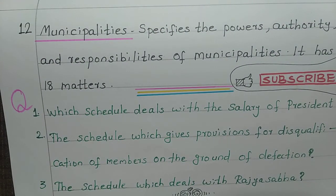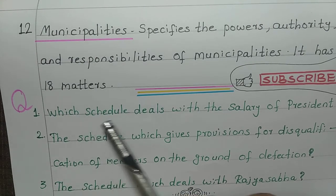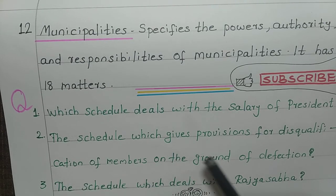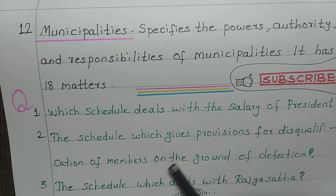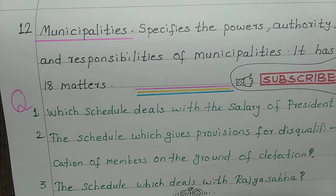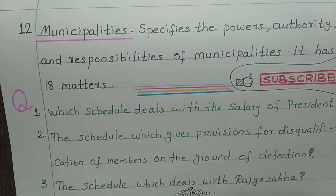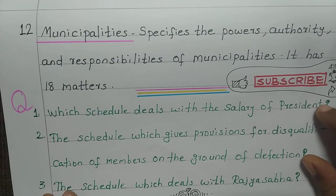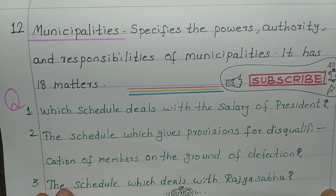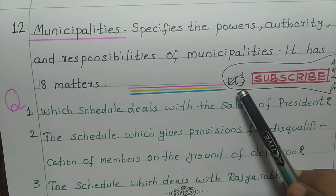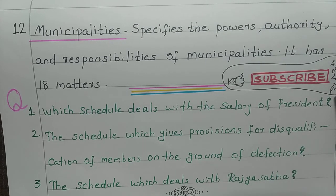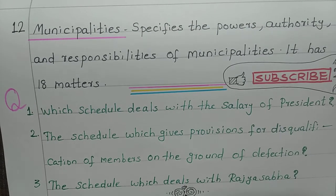Now I will ask you three questions. First: which schedule deals with the salary of the President? Second: which schedule gives provisions for disqualification of members on the ground of defection? Third: which schedule deals with Rajya Sabha? If you understood the video, please like and subscribe the channel, press the bell icon to get all notifications, and share with your friends. Thank you.